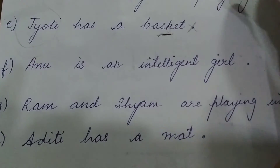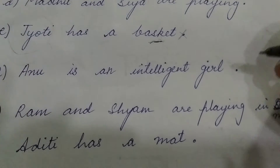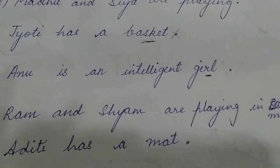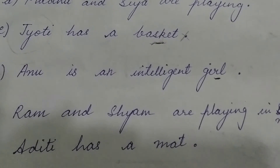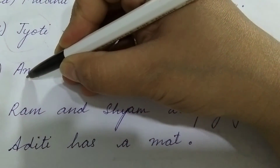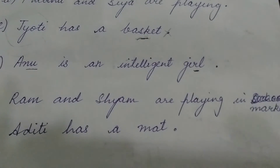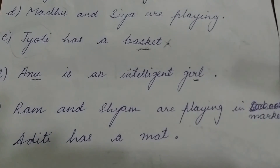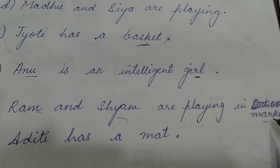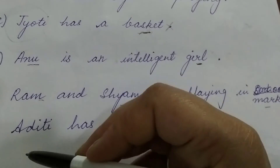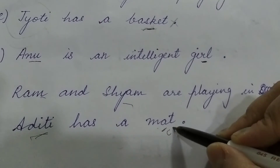'Anu is an intelligent girl.' Anu is a proper noun. Girl is a general name — boy, girl, lady — so girl is a common noun. 'Ram and Siam are playing in market.' Only Ram and Siam you will circle; market is a common or general name. 'Aditi has a mat.' Aditi is a proper noun. However, mat is a common noun.